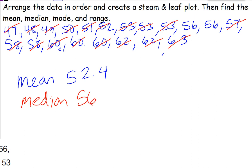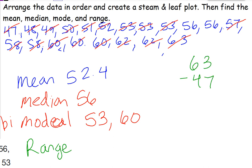And then we want the mode. Well, in this case, the mode is what we call bimodal, which means that there are two modes, because the number fifty-three and the number sixty are repeated the same number of times. So fifty-three and sixty are the two modes. And finally, for the range, we're going to do sixty-three minus forty-seven, and that's sixteen.